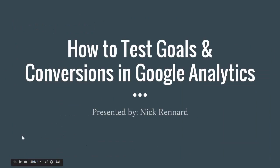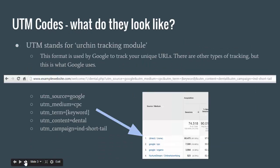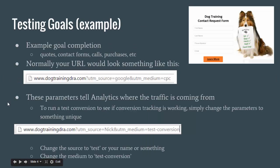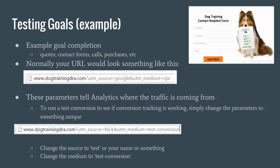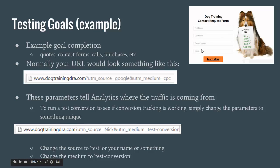The original name of this vlog was How to Test Goals and Conversions in Analytics. What we're going to do is use the UTM codes to test a conversion that you want to track on your website. I'm going to use an example here for a dog training website that I just made up — I used to do dog training as my career, so I use a lot of dog training examples. We're going to pretend like we have a website where we have a contact request form for dog training. You enter your name, phone number, email, click a button, and we track that as a conversion.